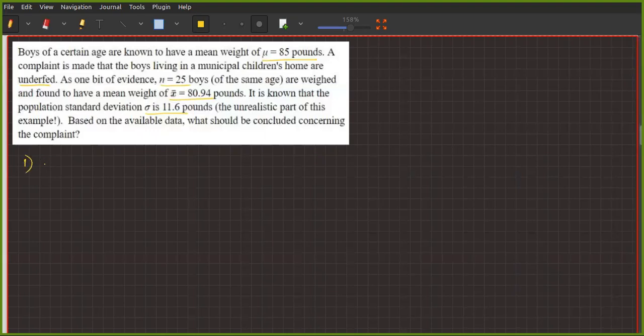We have to use the null hypothesis and alternate hypothesis. The null hypothesis is very easy. Initially, the guess rate of μ is equal to 85 pounds.